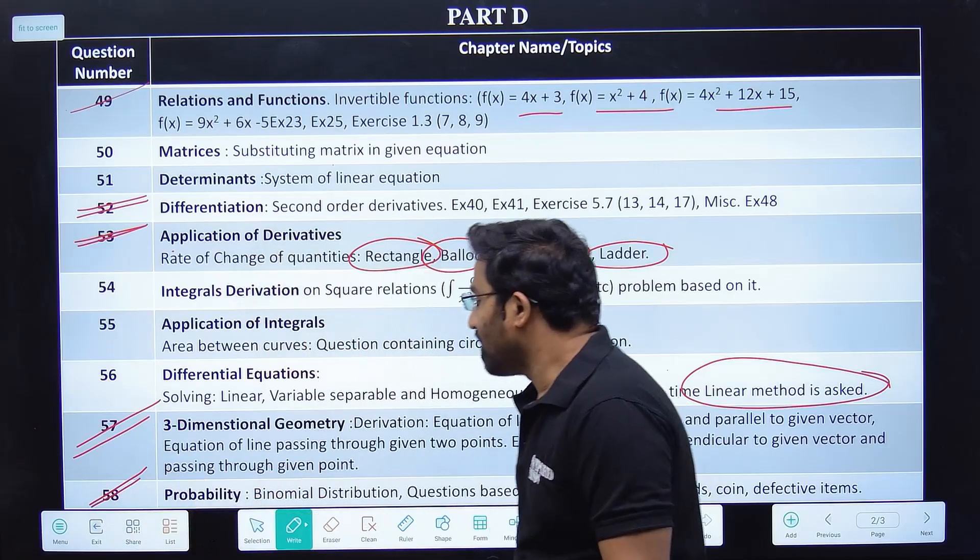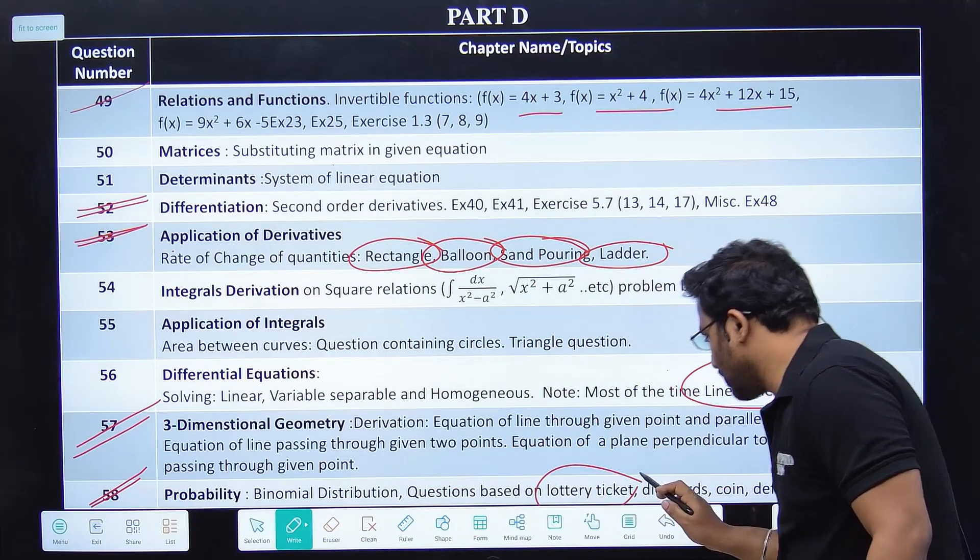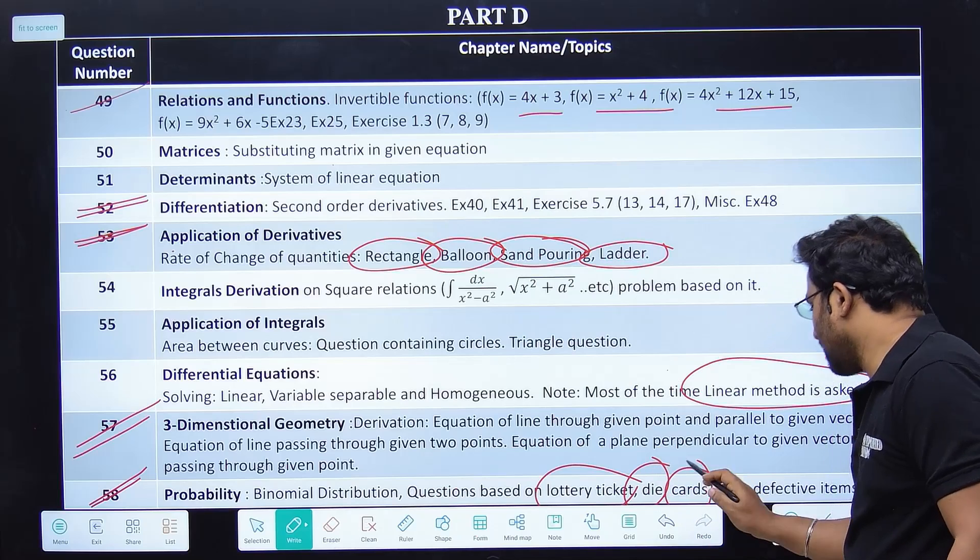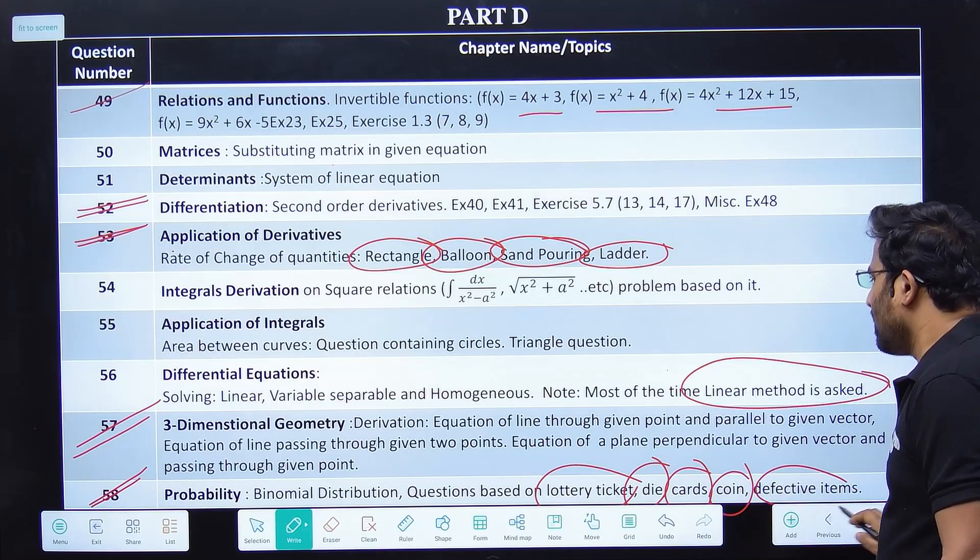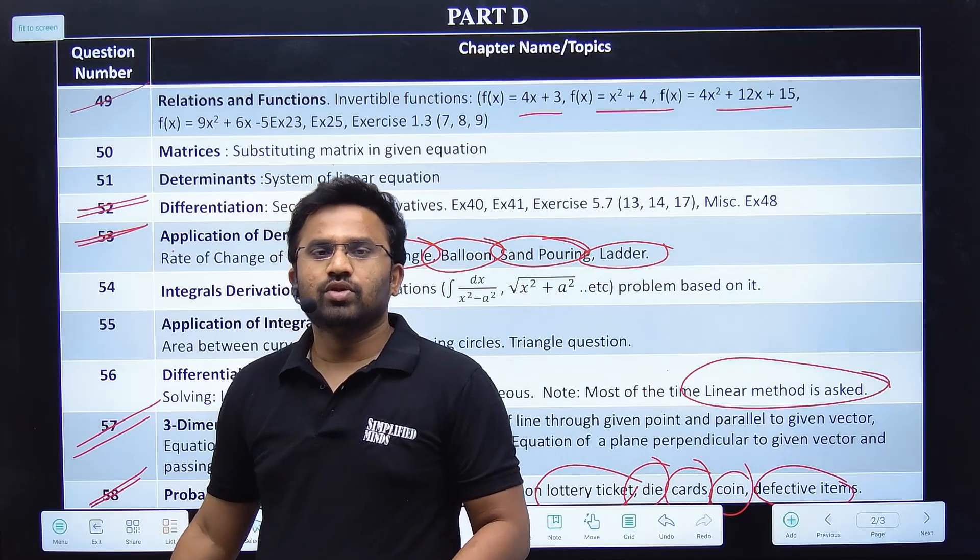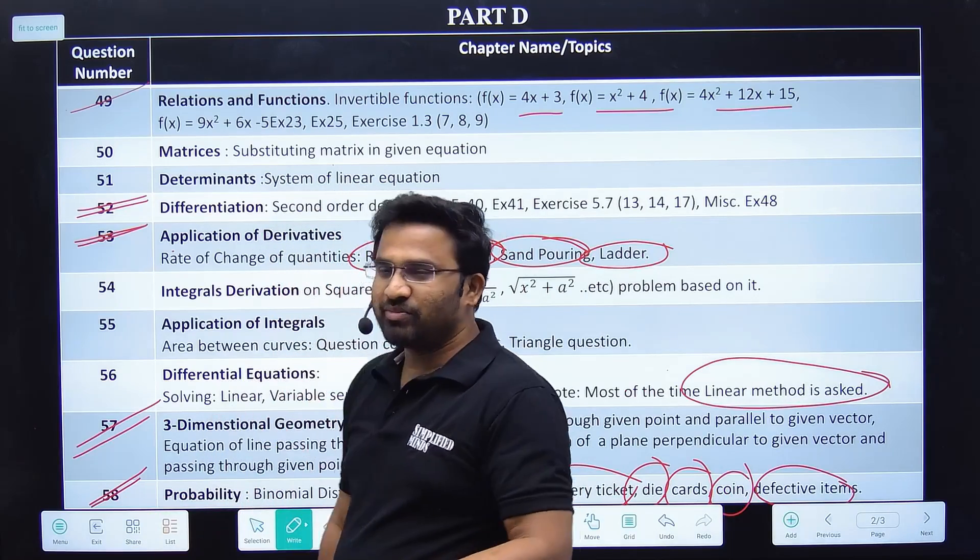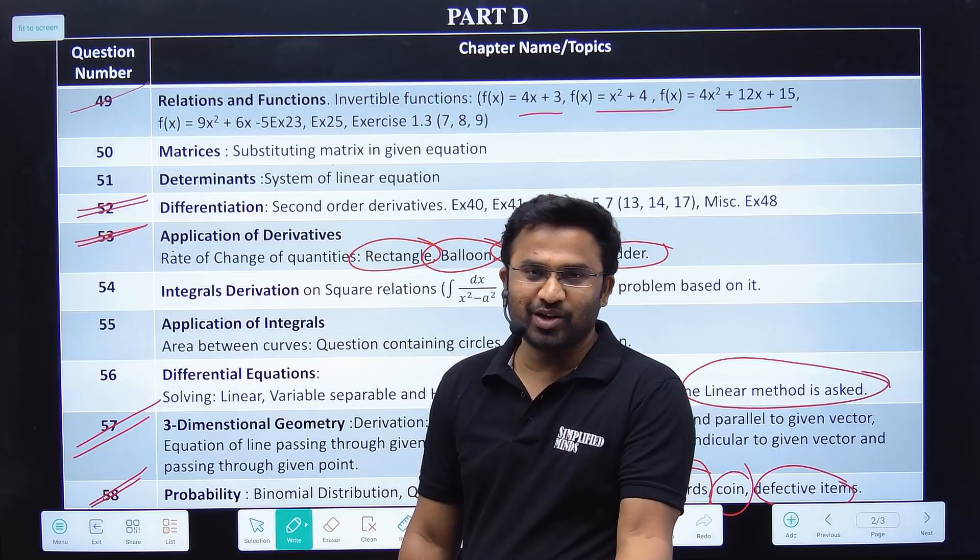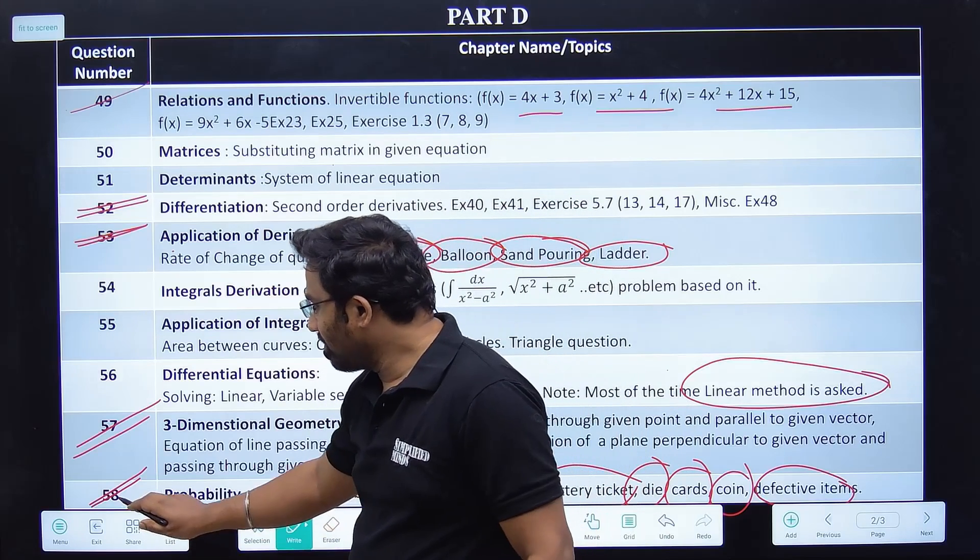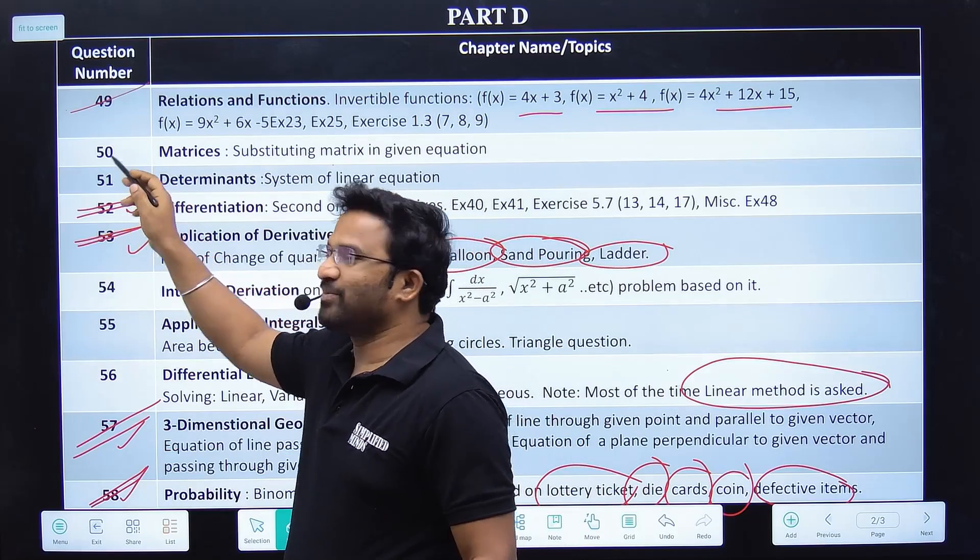I have solved the Probability. Binomial distribution - usually lottery tickets, die, cards, coin, defective items. These equations are actually easier if they're not tough, same questions actually. Again I have made a video on this also, all the questions. Now in Simplified Minds YouTube channel, you do this chapter, this chapter, Determinants.